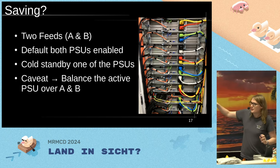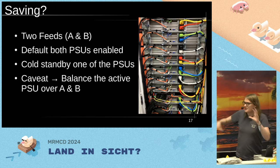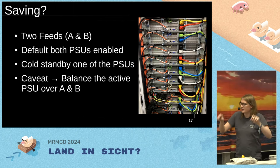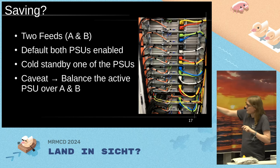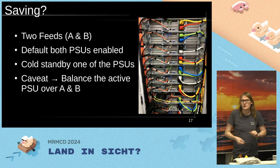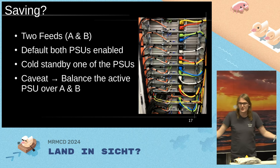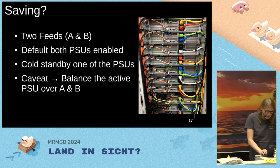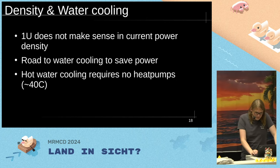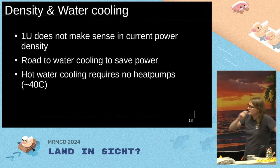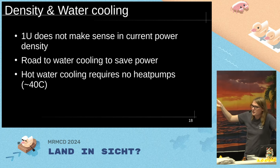Since we cannot always select which PSU is active by default in all systems, we use interleaving. Dell servers allow you to randomize which PSU they use on boot, and a few other vendors do the same. So regarding density: 1U is basically a bad choice — don't buy it.